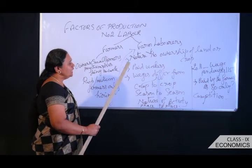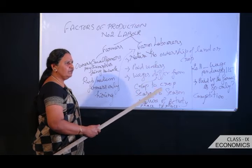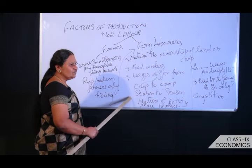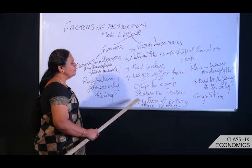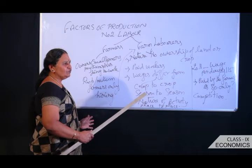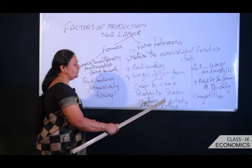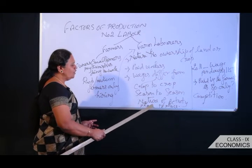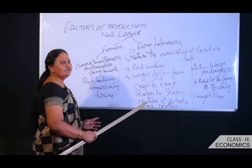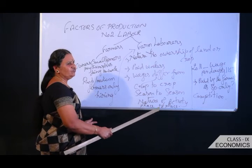Wages are not identical everywhere or every season. Wages differ from crop to crop, season to season, and nature of activity — harvesting, weeding, and sowing each attract different wages. Wages also differ from place to place. For example, in Kerala, if laborers are fewer in number, payment may be higher, whereas in Tamil Nadu if laborers are fewer they may get more wage.